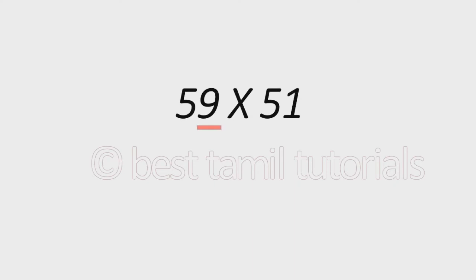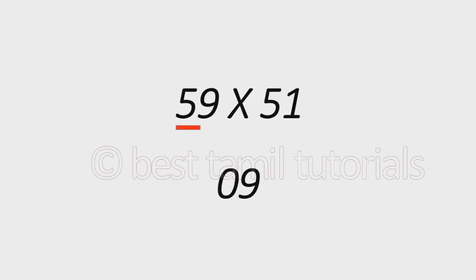The next example is 59 into 51. The last digits: 9 plus 1 is 10, and the first digit is the same. In this method, 9 into 1 is 9. The first digit is 5, and the next number is 6. So 6 into 5 gives the multiplication. This is the answer.